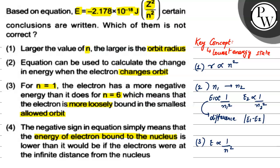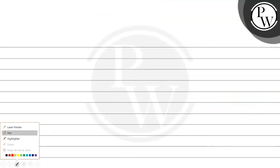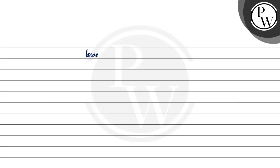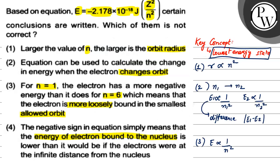What actually happens when energy is low? When energy is low, it is called the lowest energy state — which is the key concept used here. In this state, the electron is more tightly bound. So when N is equal to 1, the lowest energy state, we have the most negative energy present. That is why it is the most tightly bound, instead of loosely bound. So this conclusion is wrong, and that is why this is going to be the option we will choose.